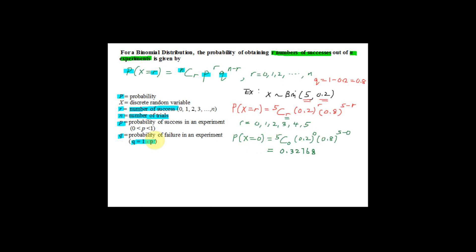Now let's find P(X = 3). Very simple — substitute r = 3 into the formula. So you have 5C3 × (0.2)^3 × (0.8)^(5−3), which gives (0.8)^2. This equals 0.0512. It's very simple — just substitute the value of r into the formula.